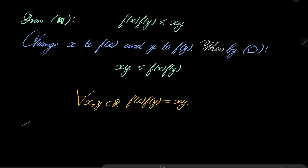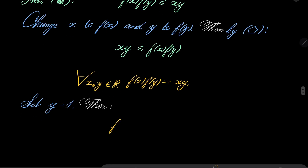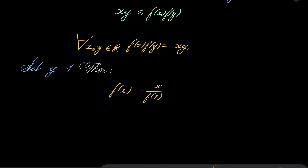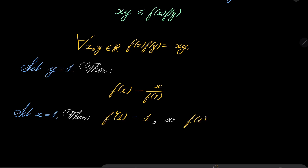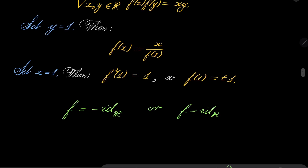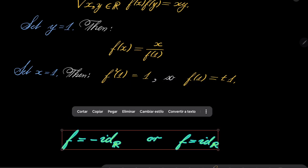In particular, set y = 1: we get f(x) = x / f(1). Setting x = 1 gives f²(1) = 1, so f(1) = +1 or f(1) = -1. This means our function is either the identity f(x) = x or the negative identity f(x) = -x. These should be our two solutions, and we will verify them in a moment.